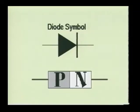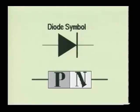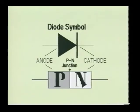A semiconductor diode will consist of both P-type and N-type semiconductor materials which are joined together. Here we see the schematic symbol of a general-purpose diode. The P-material forms the anode, and the N-material forms the cathode. Where the two materials are joined is called the P-N junction.